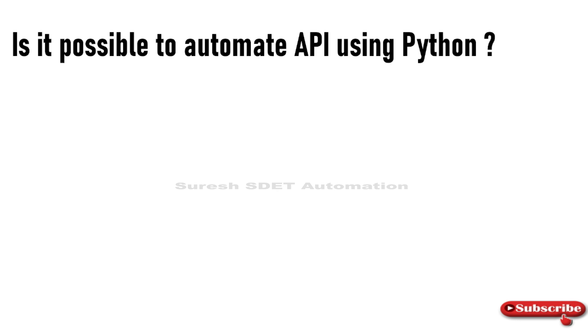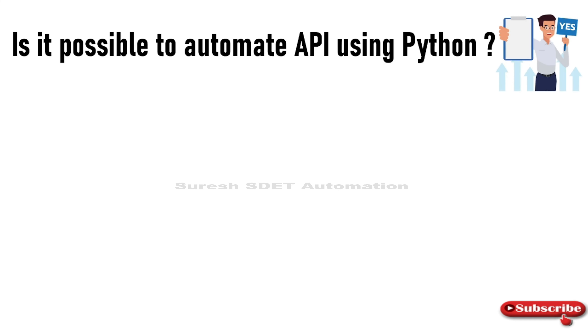Hello guys, this is Suresh from ISD Automation channel. Today in this session we're going to start a new series for API testing, which is nothing but API automation. We have seen API testing and API automation using Postman tool and also REST assured. The first question that may come into your mind is: is it possible to automate APIs using Python? The answer is yes, we can do API automation with Python.